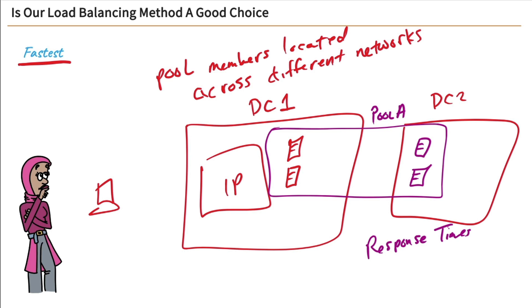So what happens is the big IP, it looks at who has the fastest response times, and it then prefers those pool members. So when a client connects in, it's going to say, hey, who has the fastest response time, and it's going to load balance accordingly.